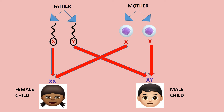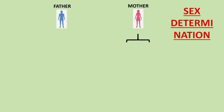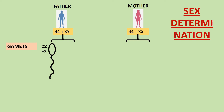Now let us understand in detail how sex determination occurs. The father has 23 pairs of chromosomes: 22 pairs are autosomes and one pair is sex chromosomes, making the father's complement 44 plus XY. The mother's is 44 plus XX. Both parents form gametes. From the father, two types of sperm cells are formed: one with 22 plus X chromosome and the second with 22 plus Y chromosome.